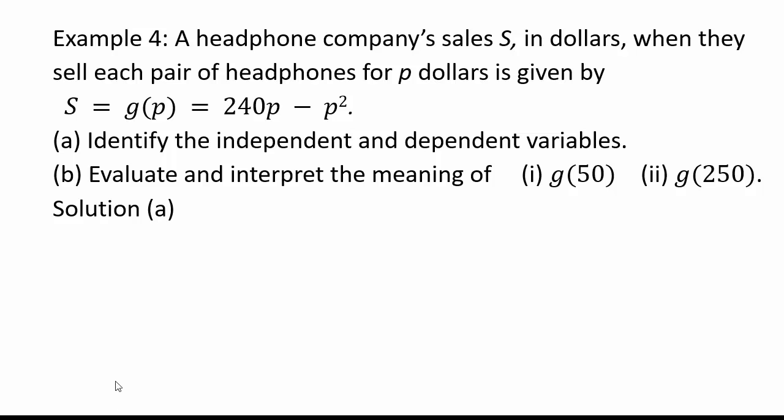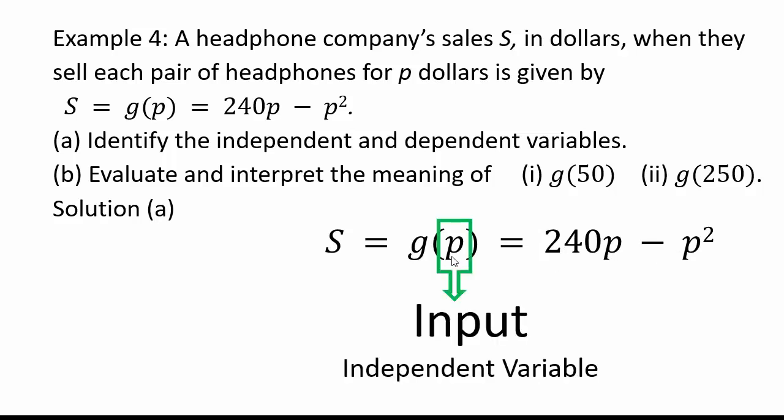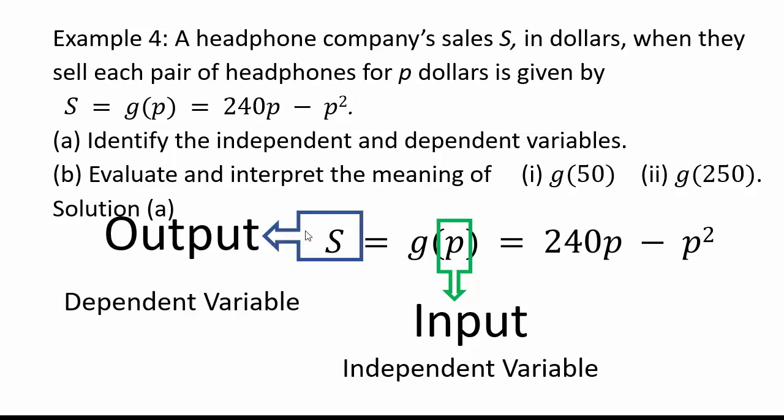All right, assuming you've come back, we have S equals g of P which is 240 times P minus P squared. So our P is our input variable and our S is the output variable. So P is independent variable, S is dependent variable.